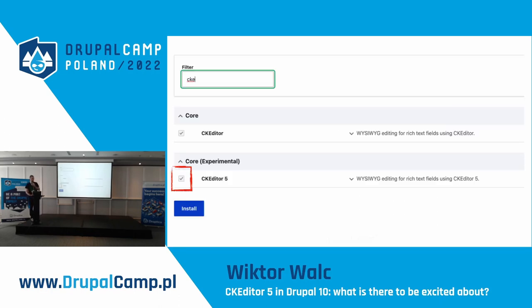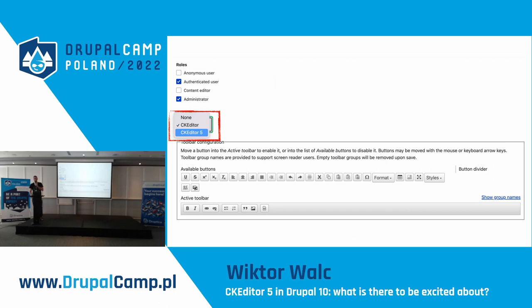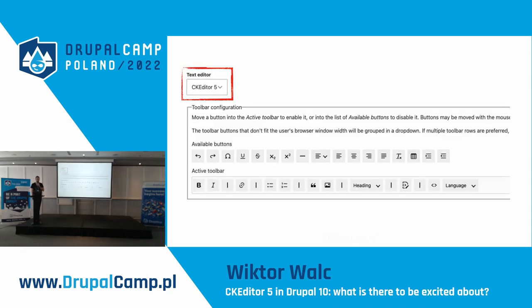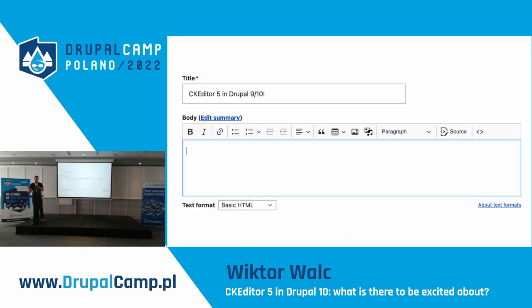Enabling CKEditor 5 is really straightforward. You go to the modules page, find the experimental section, and enable CKEditor 5. Then you go to the text formats and editors configuration, and enable CKEditor 5 on the chosen text format. You will see some warnings — they are intentional. The Drupal team automatically ports the configuration from CKEditor 4 to CKEditor 5, so you don't have to do anything manually. Once you save, you will see a brand new toolbar configurator with CKEditor 5 toolbar buttons, and you are ready to go.